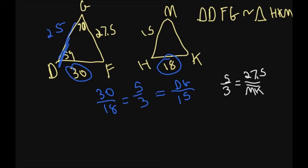Normally we just put one variable there, but I'm trying to show you that we're looking for the side MK. Well here there's nothing easily multiplied in my head that gives me 27 and a half, so I'm going to go ahead and cross multiply here. So I'm going to do 3 times 27 and a half and get 82 and a half equals 5 times MK. So divide that by 5 and I get MK equals 16 and a half.